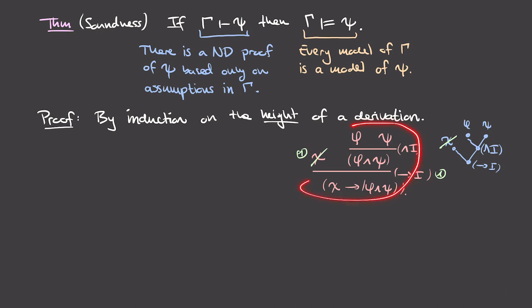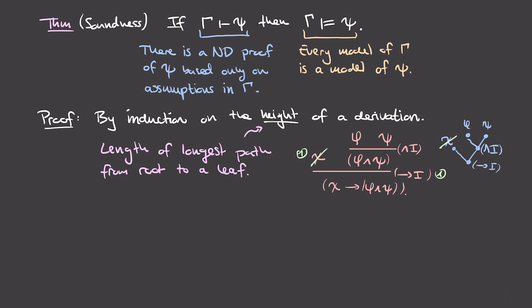The height of a derivation is the height of the rooted tree that corresponds to it — the length of the longest path from the root to any leaf. For instance, the height of our example tree is 2, since the longest path from root to leaf has length 2. The tree has three layers: height 0 at the top (root), height 1 at the middle, and height 2 at the bottom (leaves). Since every derivation is just such a rooted tree, we can define a height for it as a natural number and perform induction on it.